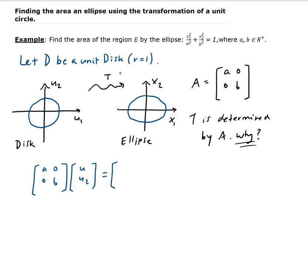And this is going to, because we want to get something in terms of x1 and x2. So we have the matrix acting on something in the disk and it's going to transform it into ellipse. From here, from these equations, this is going to give us a*U1 = x1 and b*U2 = x2.